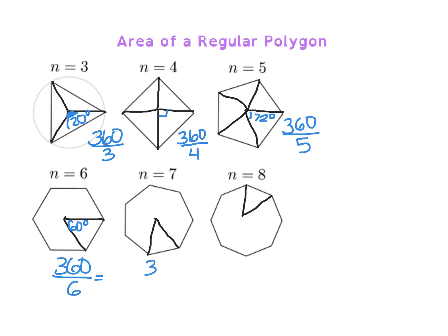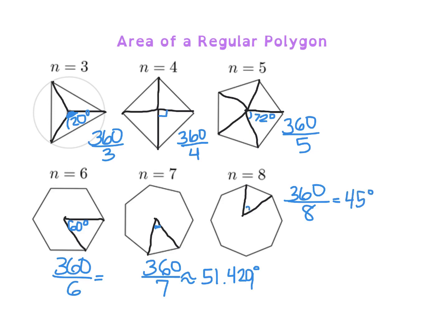360 degrees divided by 7 gives us about 51.429 degrees. I rounded that number because 360 is not easily divisible by 7. And then we can divide 360 by 8, which gives us 45 degrees.